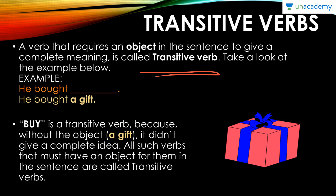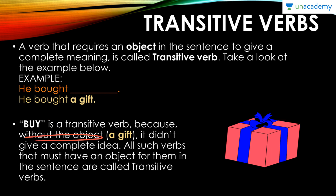Let's take a quick look at an example. 'He bought' — it's not a full sentence, right? He bought what? He bought a gift, he bought a book — he bought something. So 'buy' is the present tense of 'bought,' which is in past tense. Buy is a transitive verb because without an object like 'a gift,' it doesn't give a complete idea. All such verbs that must have an object in the sentence are known as transitive verbs, because without the object the sentence will be incomplete.